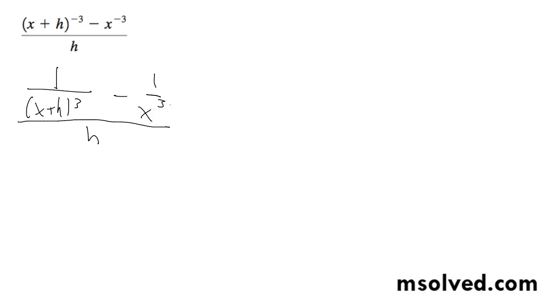What we can do next is find the common denominator for the top portion, which is going to be x cubed times x plus h cubed. So we're going to end up with x cubed minus x plus h cubed, all over x cubed times x plus h cubed, times h.